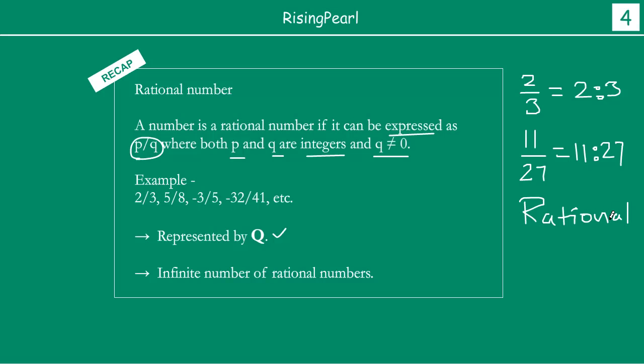So rational number, it is basically a ratio. Because whenever we express any number in P by Q form, it is nothing but a ratio. So this is how you get your rational number. See the word ratio in your rational number. Because P by Q is basically a ratio of P to Q, we call them rational number.